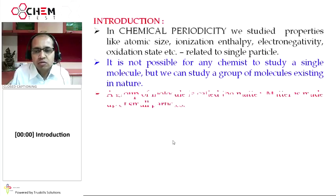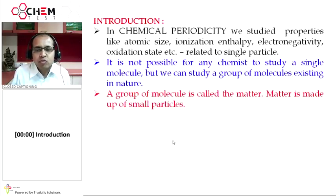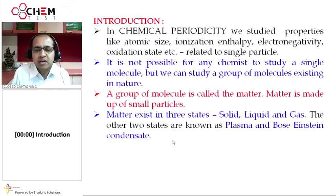This group of molecules is known as matter. Matter is made up of small particles or large numbers of small molecules. Matter exists in three different states: solid, liquid, and gas. Other than these three, plasma and Bose-Einstein condensate exist. But we are mainly concerned with the first three physical states in this chapter. Our major discussion is related to liquid and gaseous states.